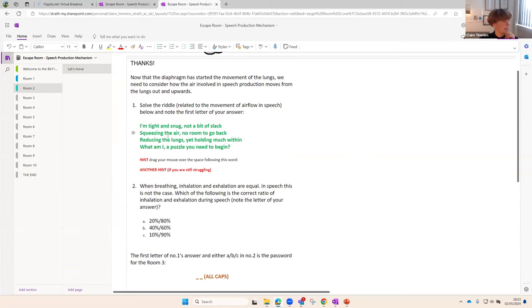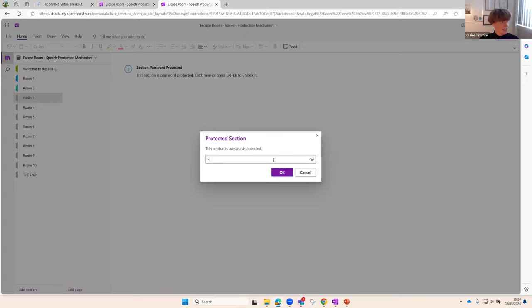So we now know the diaphragm is going to start affecting the lungs and that's going to move the lungs but we want to consider then how that's going to work. Here we have a riddle. This is one of the hardest ones actually. I'm tight and snug, not a bit of slack, squeezing the air in the room to go back, reducing lungs, yet holding much within. What am I puzzling me to begin? This is all chat GPT. This hint was again very much based on the knowledge they should have if they weren't going to get it. So for this page here you've got the first letter of number one's answer so that would be our C and either the A, B or C of the correct answer here is the password for room three. So straightforward multiple choice with a riddle at the top there.